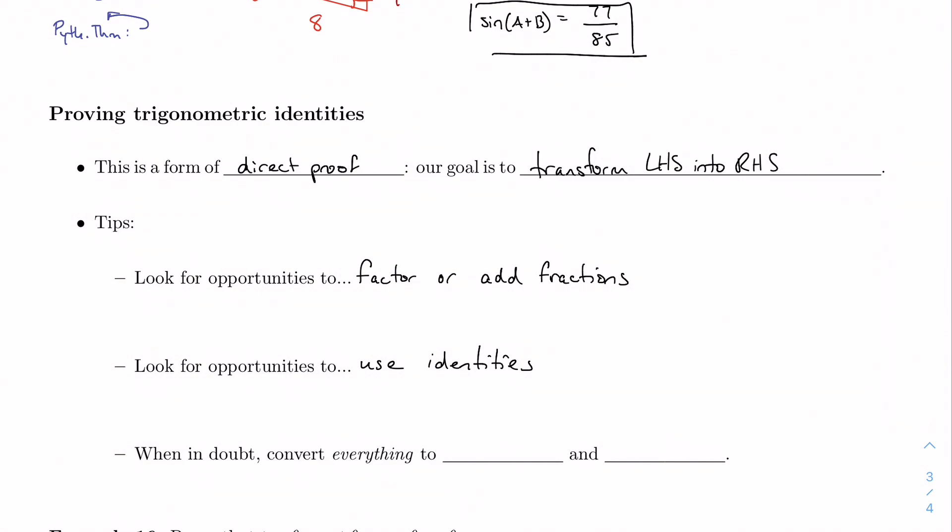If you see a sine squared, maybe that's a hint that you need to use a Pythagorean identity. If you see a tangent, maybe that's a hint that you need to use a quotient identity. Anywhere you see combinations like that, anything that jumps out at you, trust your gut. Follow your gut. When in doubt, if you don't know where to move at all, convert everything to sine and to cosine and see where that takes you. Sine and cosine are the building blocks for all of these trig functions. And if you're ever lost, go back to your roots. Go back to the basics, go back to square one, turn everything into sine and cosine.